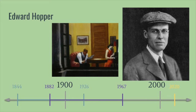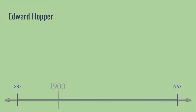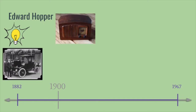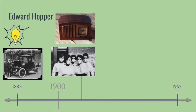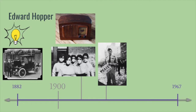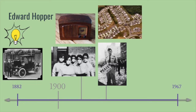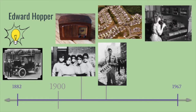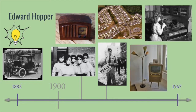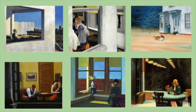Edward Hopper lived from 1882 to 1967. In his lifetime, electricity was already invented. Automobiles were invented. The radio was invented. There was the outbreak of the flu virus. Two world wars happened. More people moved from living on farms to living in cities. Families became smaller and more women began working outside the home. Television was invented and became more popular to have at home as well. In Edward Hopper's paintings, we see how people dressed and what activities they did during his lifetime. We can see that things have become more modern, there's more electricity, and the clothing looks more similar to our own clothing.